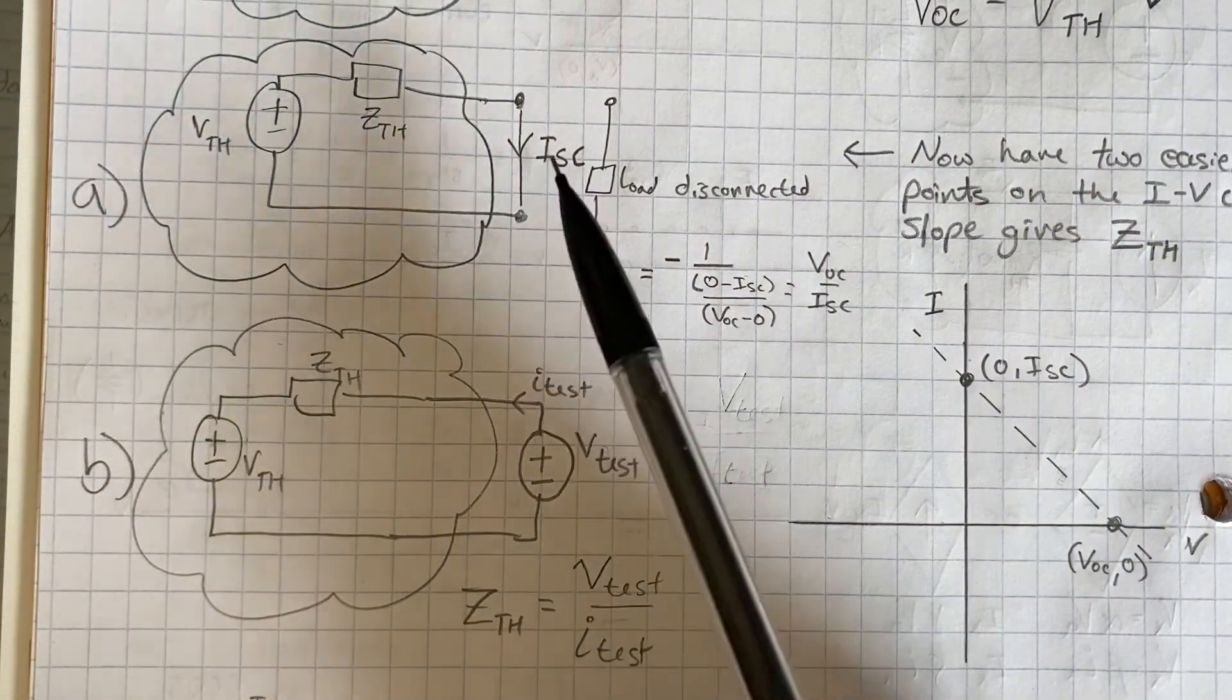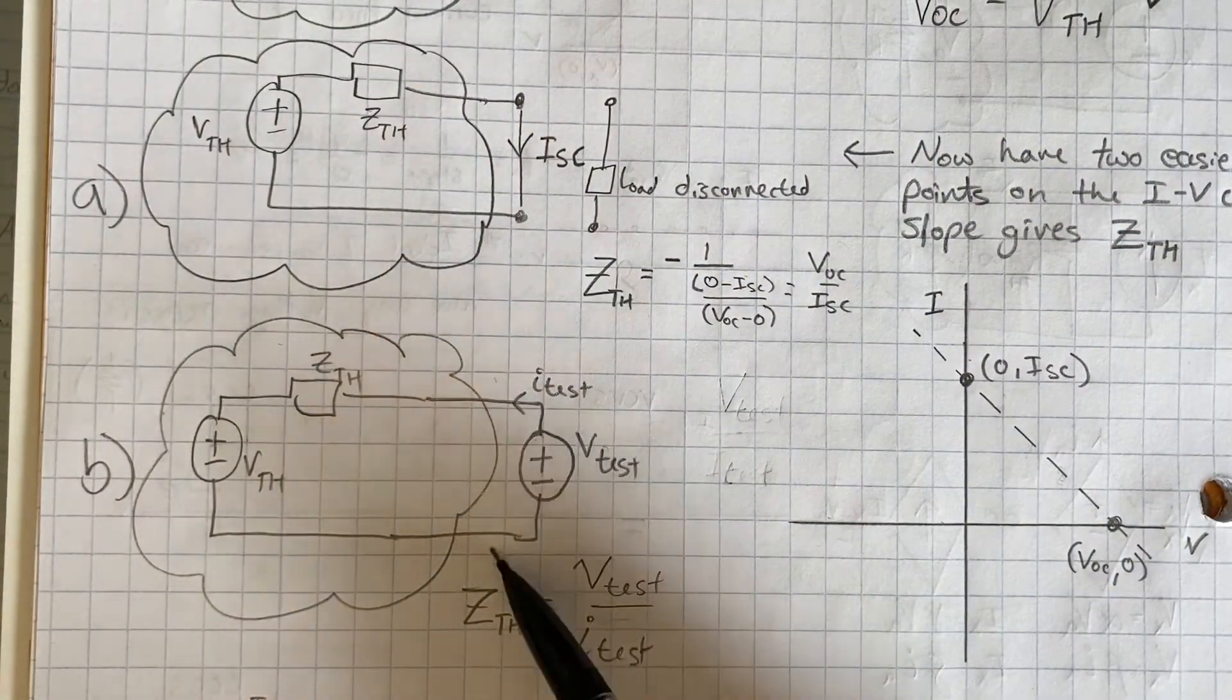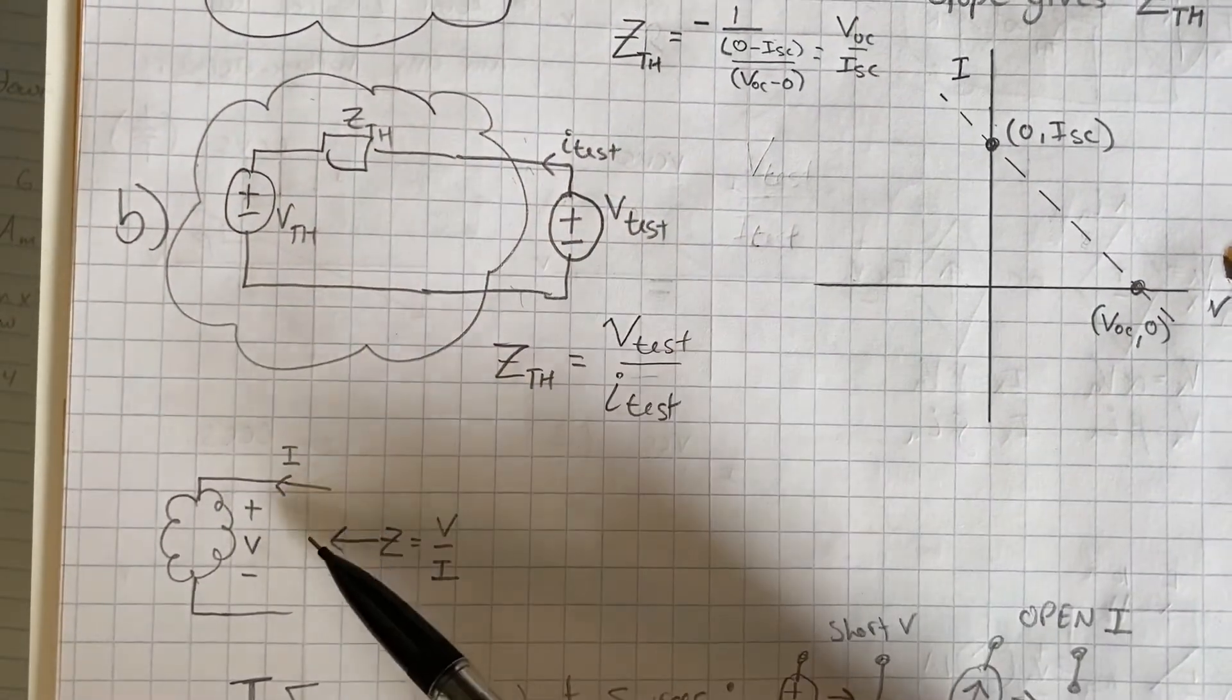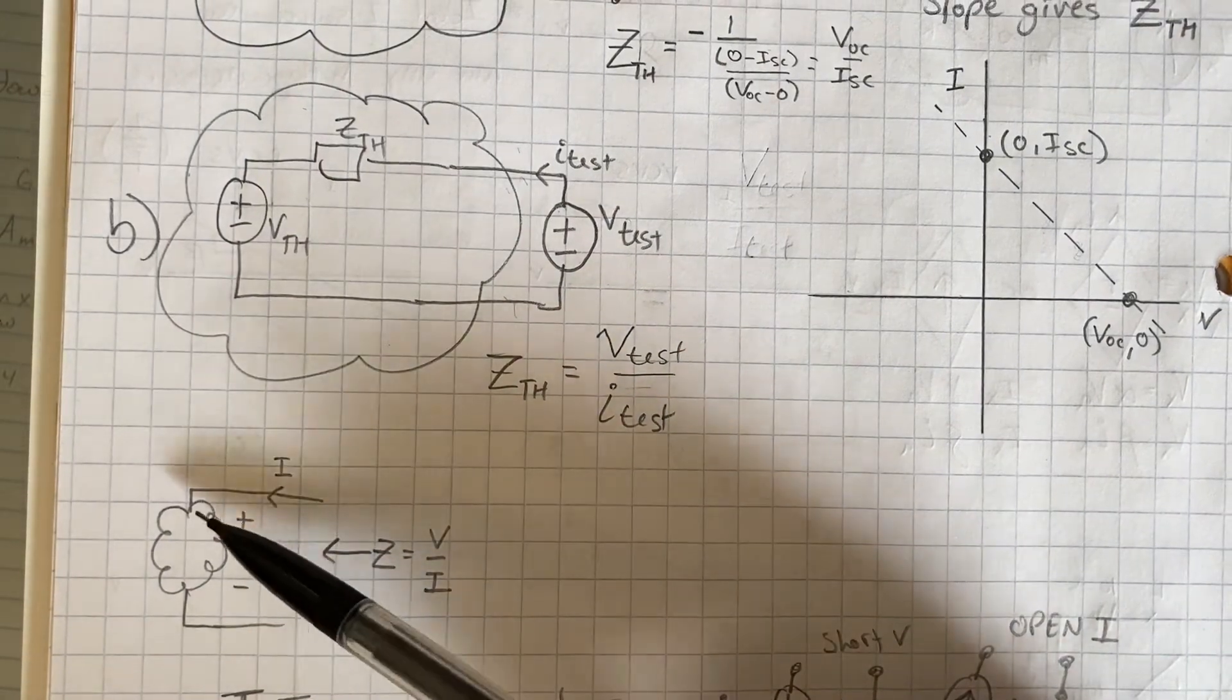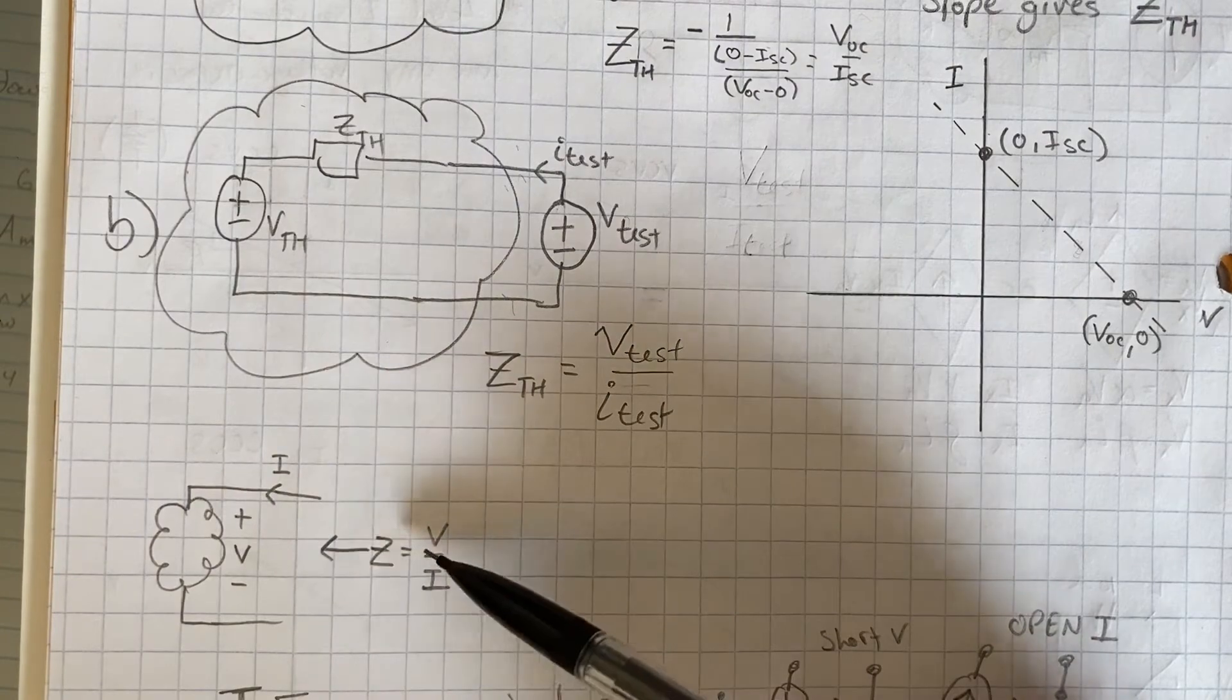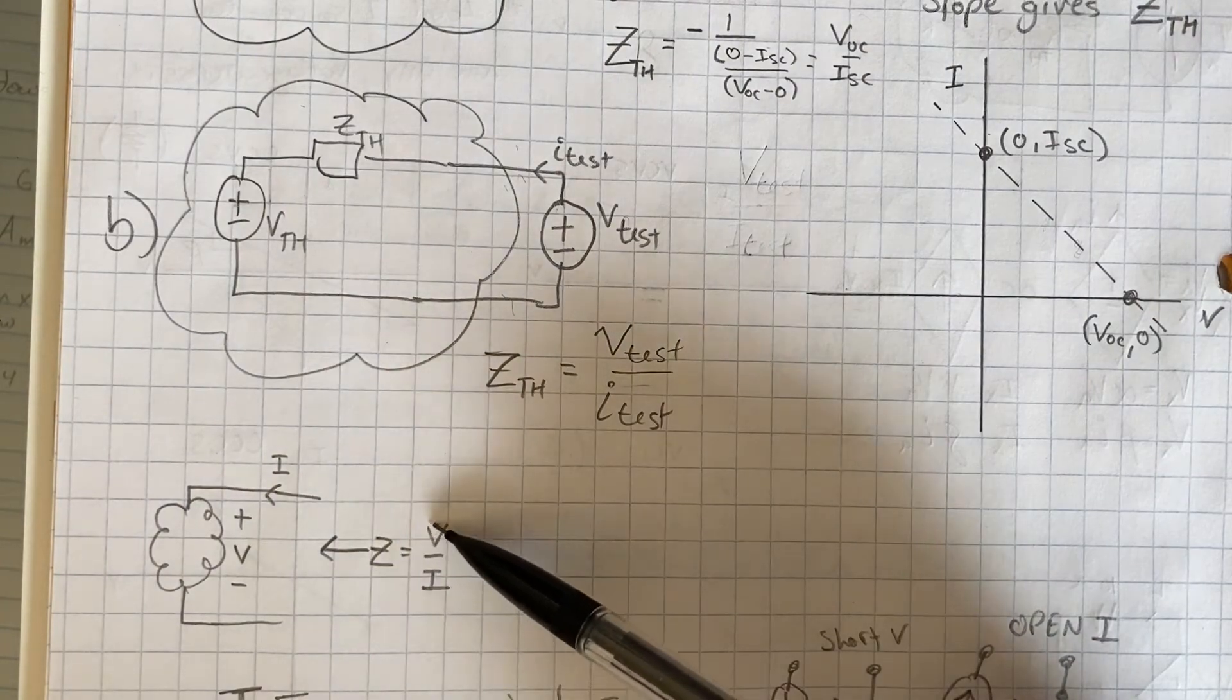Here we can see we're finding the voltage across our network and dividing by the current through it. Notice here we have our network defined this way. So we have some voltage across it and a current entering, which means the impedance is just defined as voltage over current.